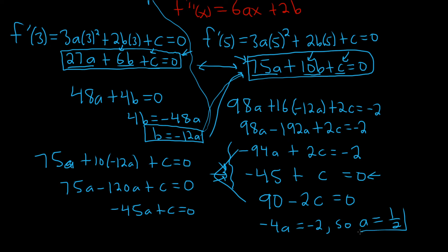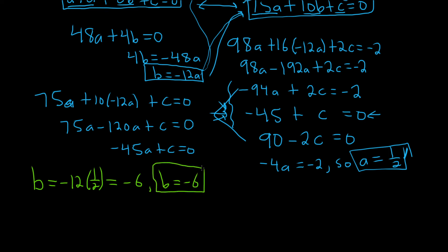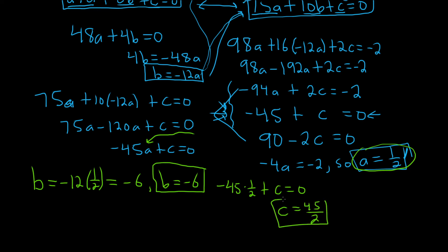So a = 1/2. Now we can find b: b = −12a = −12 × 1/2 = −6. And for c, using −45a + c = 0: −45(1/2) + c = 0, so c = 45/2.